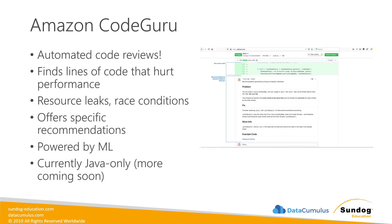Another new service is Amazon CodeGuru. If you're a developer, you might find this exciting — it's basically automated code reviews. It's really more of a code profiler powered by machine learning. It's good at finding lines of code that might hurt performance, and can also identify resource leaks and race conditions, offering specific recommendations for fixing those. Tools like this have existed for a long time, but this one is powered by machine learning and offered as a high-level AWS service that integrates with GitHub automatically. Currently it only supports Java, with more languages coming soon.